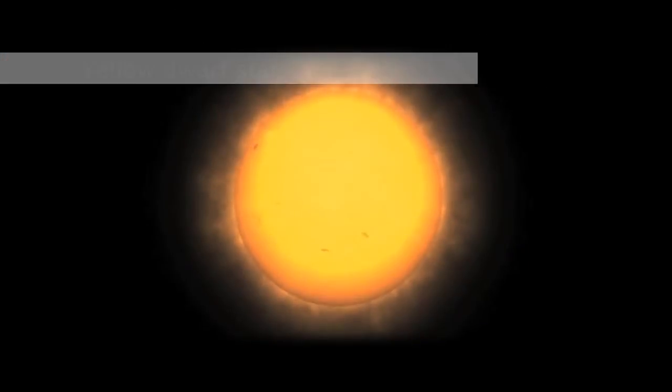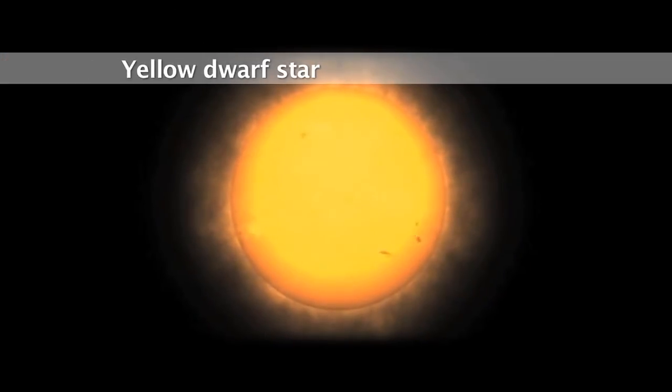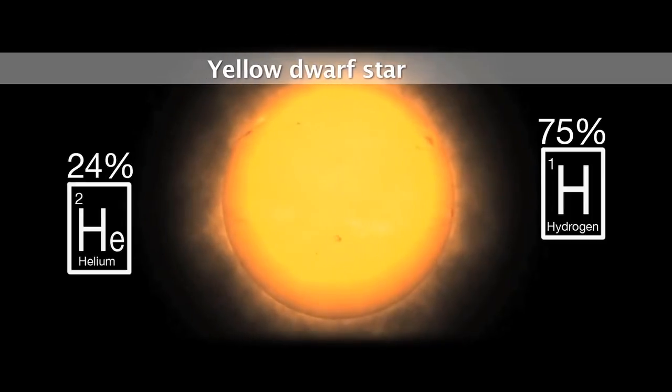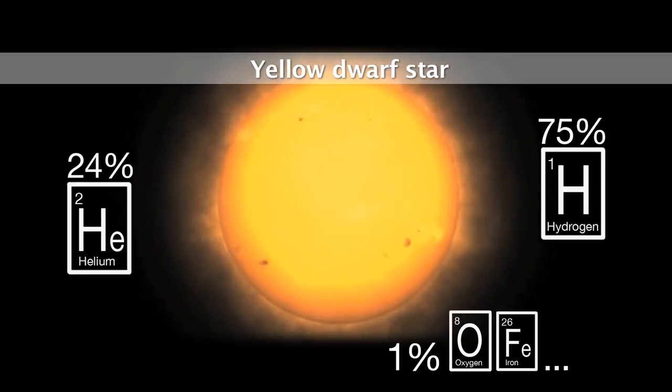The Sun is a yellow dwarf star consisting in fractions of mass of 75% hydrogen, 24% helium, and around 1% heavier elements.